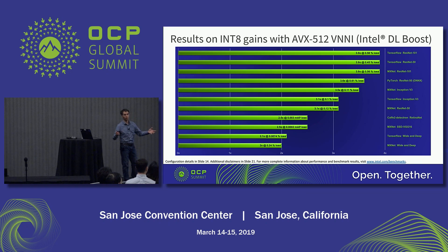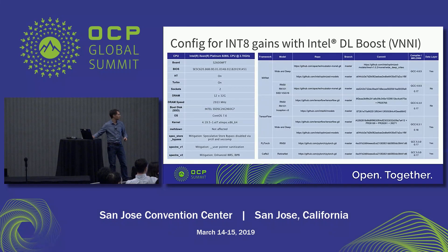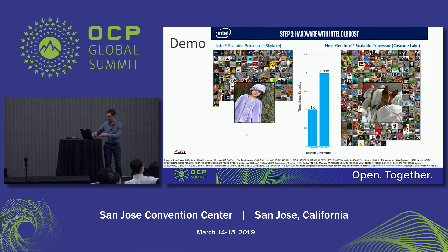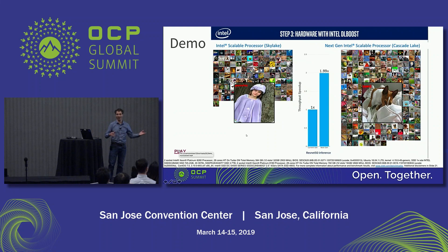I invite you, on your platforms when running deep learning models, to take advantage of Int8 optimizations and the FP32 optimizations that Intel has been doing. You can replicate the results with these configurations, which will be posted. I want to share a quick demo to show some of the performance improvements we've observed over the past year and a half.